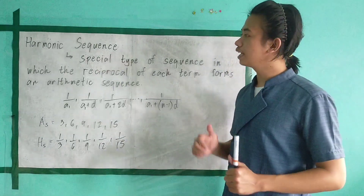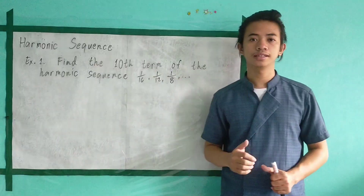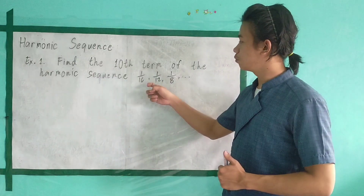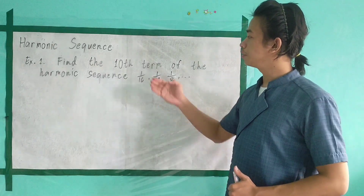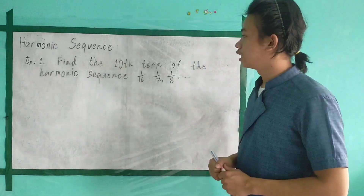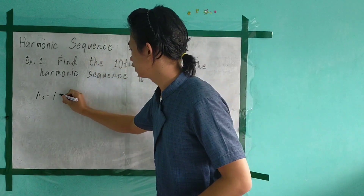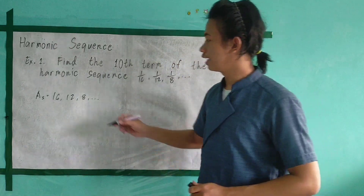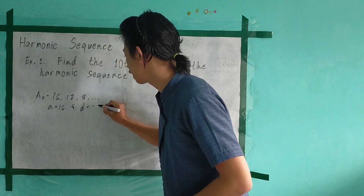For better understanding, let's have an example. Find the 10th term of the harmonic sequence given 1 over 16, 1 over 12, 1 over 8, and so on. To determine the 10th term, consider only the set of reciprocals. The corresponding arithmetic sequence is 16, 12, 8, and so on. Our A sub 1 is equal to 16, and the common difference is equal to negative 4.